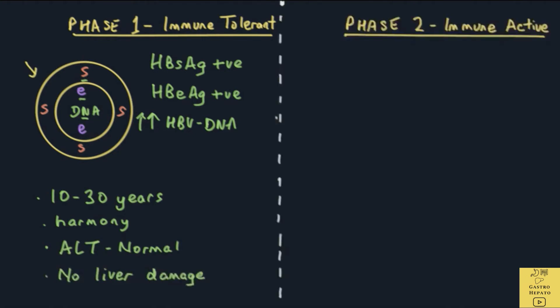The next phase is Phase 2, the immune-active phase. It is now that the body's immune system finally recognizes that the virus is an enemy and starts to attack the virus. In the process of attacking the virus, collateral damage is done to the liver.